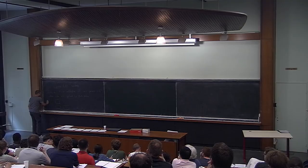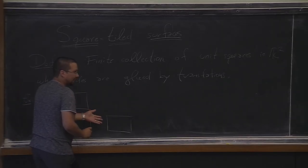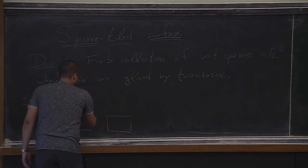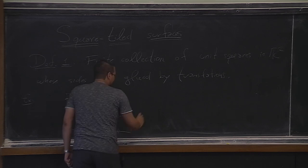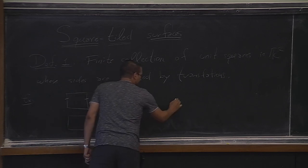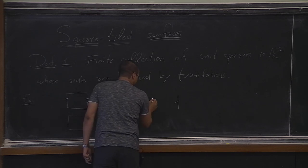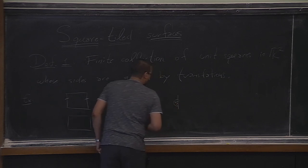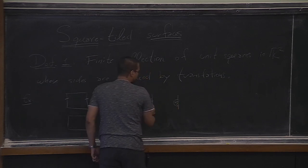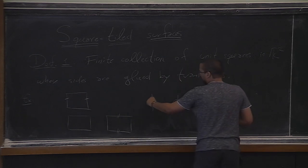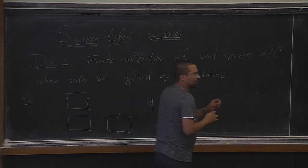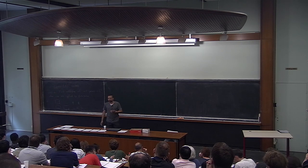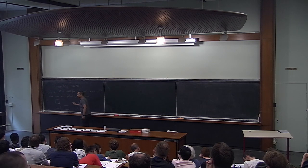Let's take three squares. I want to glue right sides with left sides and bottom sides with top sides. I want to avoid having to glue a right side with another right side, because this means that around that point, if I do this identification by translation, I don't quite get the full Euclidean neighborhood around this point — and I really want to stick to surfaces. At each point you have a full topological disk around it, not these kinds of half disks. So this is forbidden.